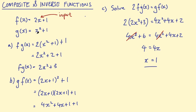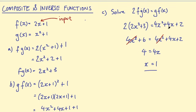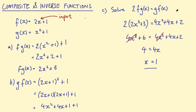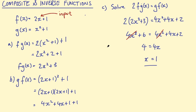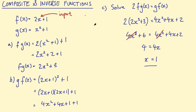So from this basic element of combining two functions — inputting one function into another — you can get more complicated-looking questions. But this is really just solving an equation with one unknown, which you've probably done before. The new element is the function notation, which adds just a slight level of difficulty to the question.